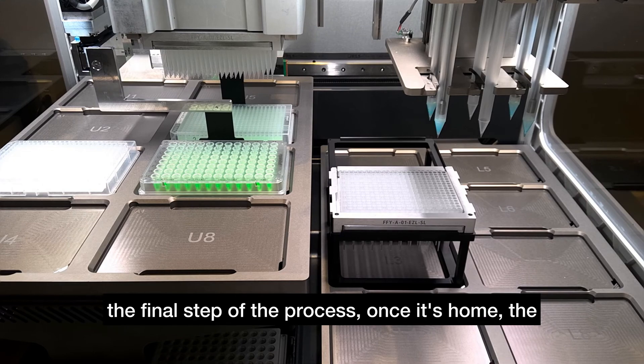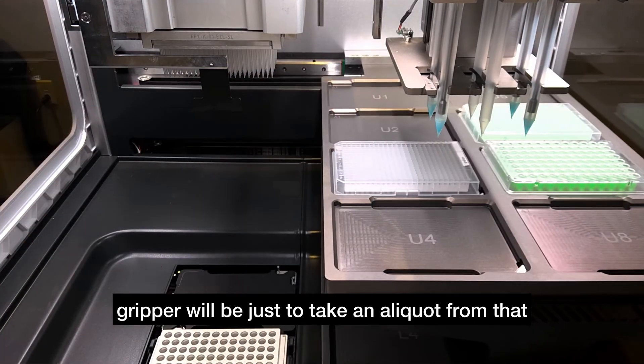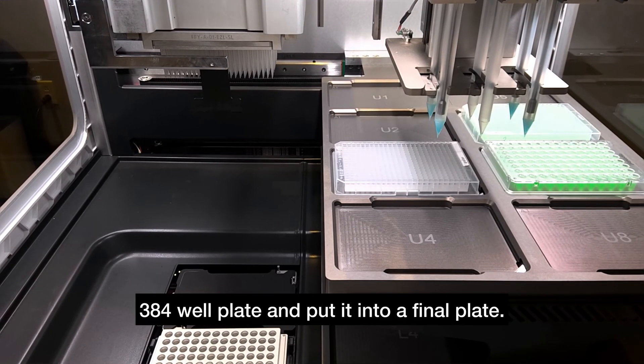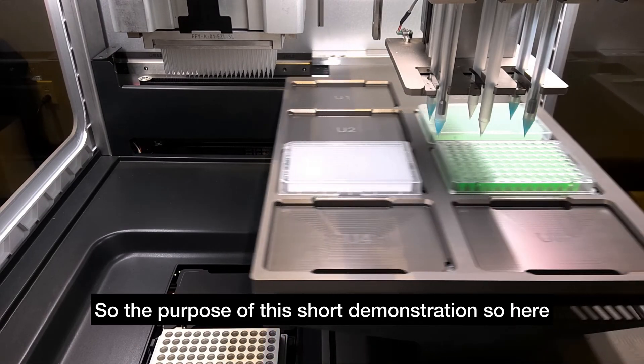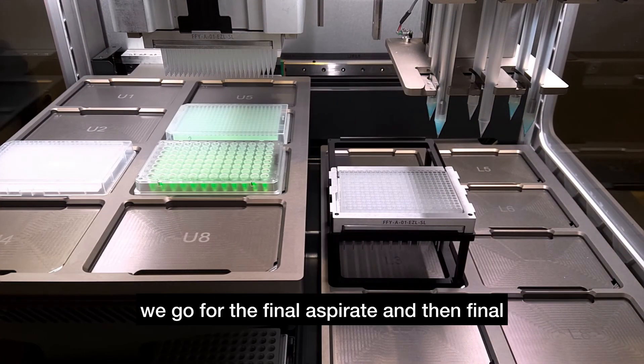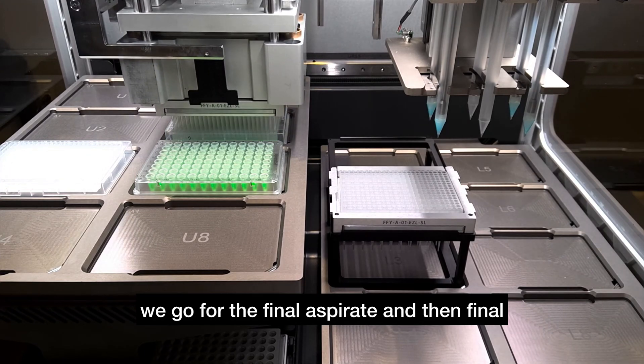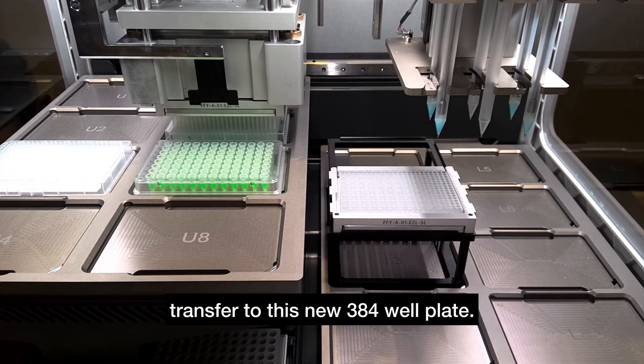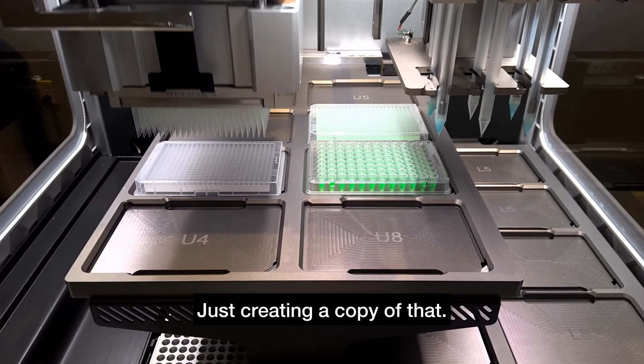The final step of the process, once it's home, will be to take an aliquot from that 384 well plate and put it into a final plate. Here we go for the final aspirate and then final transfer to this new 384 well plate, just creating a copy of that.